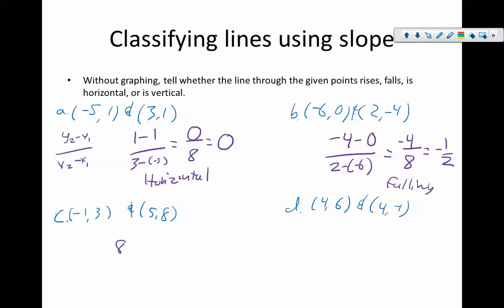Part C, we have 8 minus 3 and 5 minus negative 1, which gives us 5 over 6. This is a positive slope, therefore, it is rising.